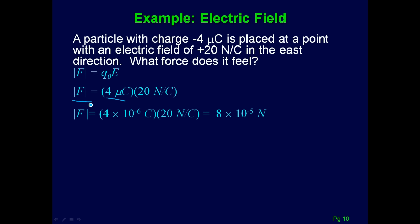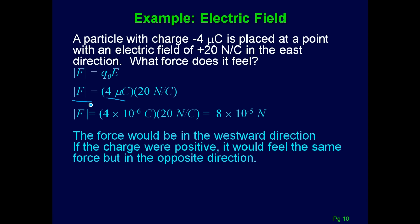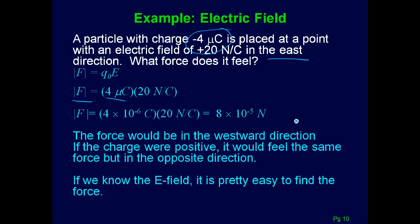It's 4×10⁻⁶ times 20, giving 8×10⁻⁵ newtons. The direction is westward. Why? The electric field points east, and since it's a negative charge, the negative charge is going to feel an opposite force to what a positive would have felt. A positive would have felt a force east, but a negative charge feels that force in the west. So if we know the E-field, it's not too tricky to find the force on a point charge.